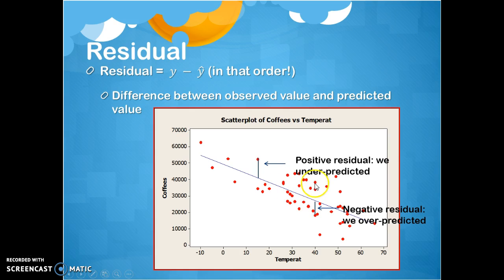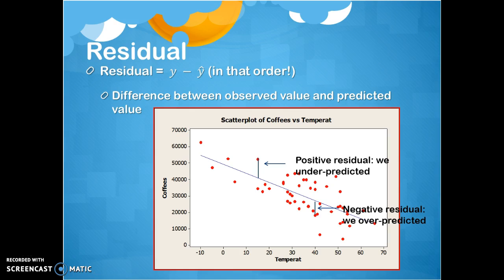Our line is basically averaging the vertical position of all these points. So you can have as many data points as you want at a given temperature — you're still going to get one predicted value, and each of those data points is going to have an associated residual for how close the line got to that actual coffee sale number.